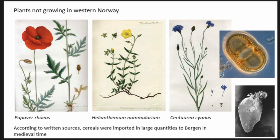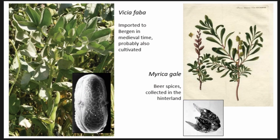Helianthemum shows contact with some other countries. Vicia faba was also imported to Bergen and is very common in these samples, showing, at least in the start, some foreign trade. Myrica, on the other hand, is growing outside Bergen — it's very common there, used for a lot of purposes, and was an important beer spice before hops, and also partly simultaneously with hops later on. We found it in large quantities, showing the utilization of the near surroundings of the town.